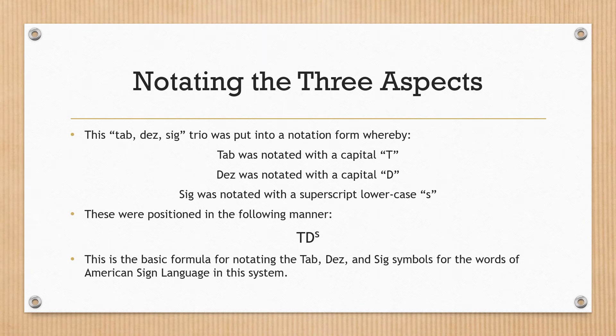Notating the three aspects. This tab, DES, SIG trio was put into a notation form whereby tab was notated with a capital T, DES was notated with a capital D, and SIG was notated with a superscript lowercase s. These were positioned as shown. This is the basic formula for notating the tab, DES and SIG symbols for the words of American Sign Language in this system.